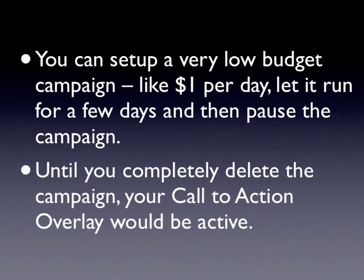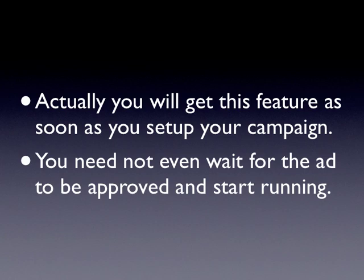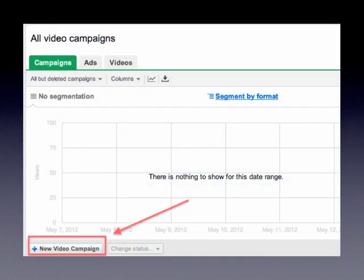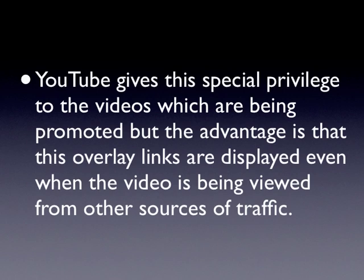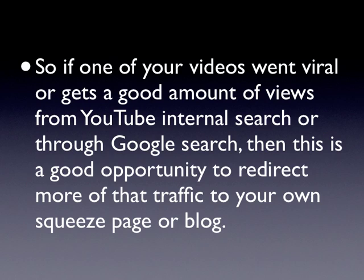Until you completely delete the campaign, your Call to Action Overlay would be active. Actually, you will get this feature as soon as you set up your campaign — you need not even wait for the ad to be approved and start running. If you log into your AdWords account, you can see a link, All Video Campaigns, in the bottom left corner. Open the page and click New Video Campaign. YouTube gives this special privilege to promoted videos, but the advantage is that these overlay links are displayed even when the video is being viewed from other traffic sources. So if one of your videos went viral, or gets a good amount of views from YouTube internal search or Google search, this is a good opportunity to redirect more of that traffic to your own squeeze page or blog.